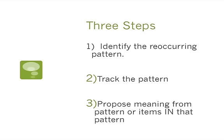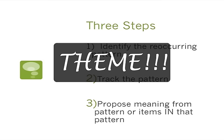Number three is the biggest thing we have to do — we have to propose meaning from the pattern. Why might they have them eat around a campfire? Why might he always talk about football? That's moving to that interpretive level, and that's what matters in literature. That's the lesson, that's the theme of a novel. We have to figure out what the author is trying to teach us, and one way to do that is to track the motifs and figure out the patterns.